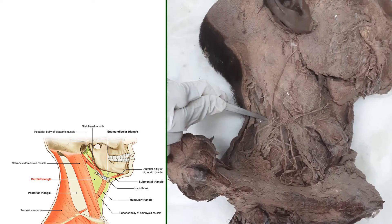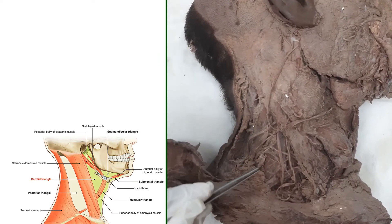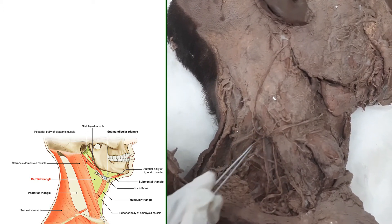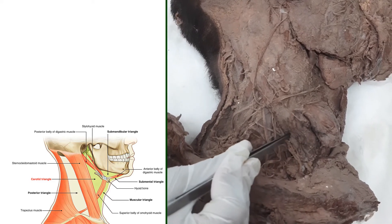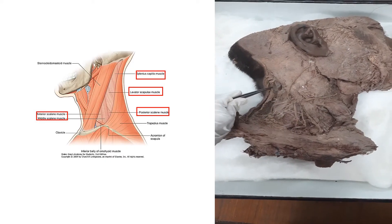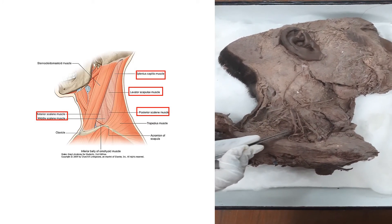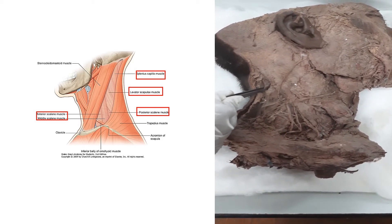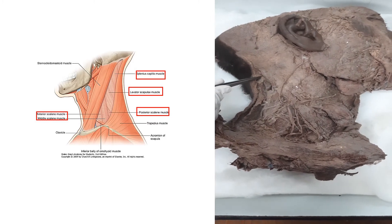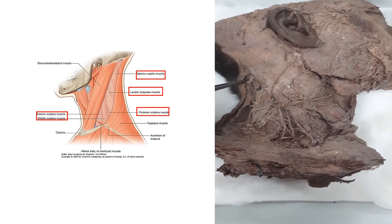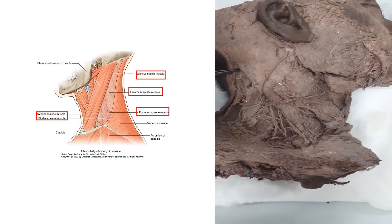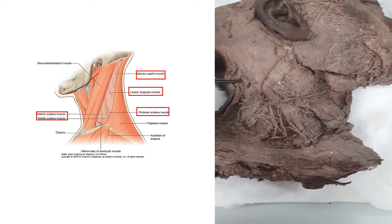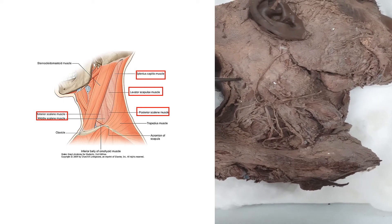The floor is formed by the pre-vertebral fascia, extending from the trapezius to the sternocleidomastoid muscle. Looking at the muscles of the floor from top to bottom, the first muscle is the splenius capitis. Sometimes we can also see the semispinalis capitis, whose fibers are vertically oriented, whereas all the other muscles of the floor run obliquely.